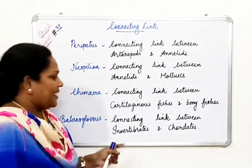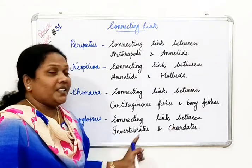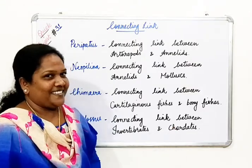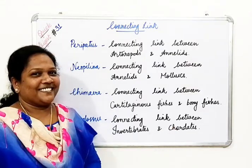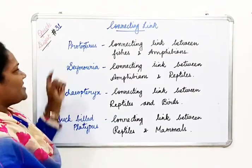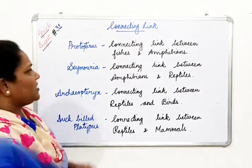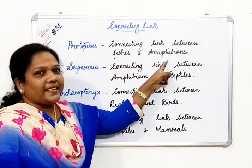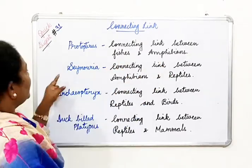Next is Balanoglossus, the connecting link between invertebrates and chordates. And next is Protopterus, the connecting link between fishes and amphibians.